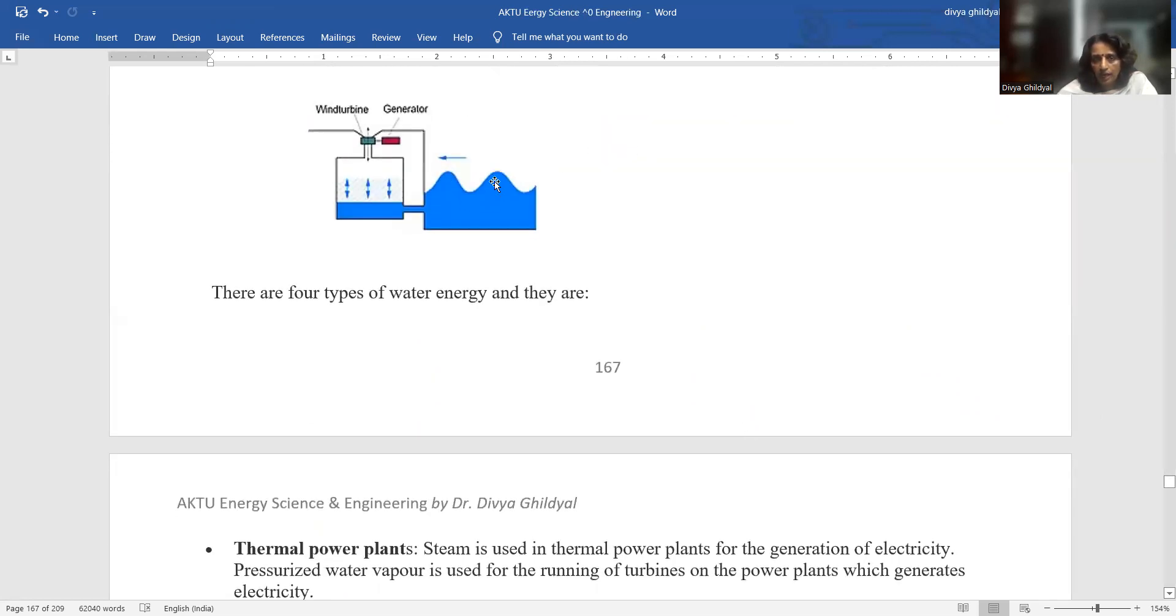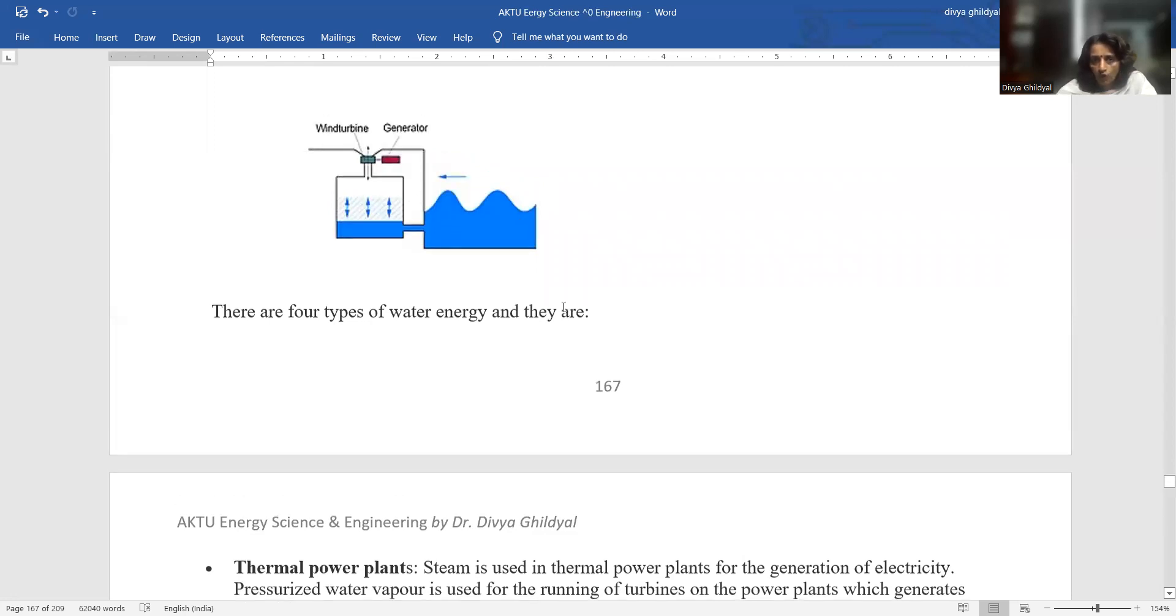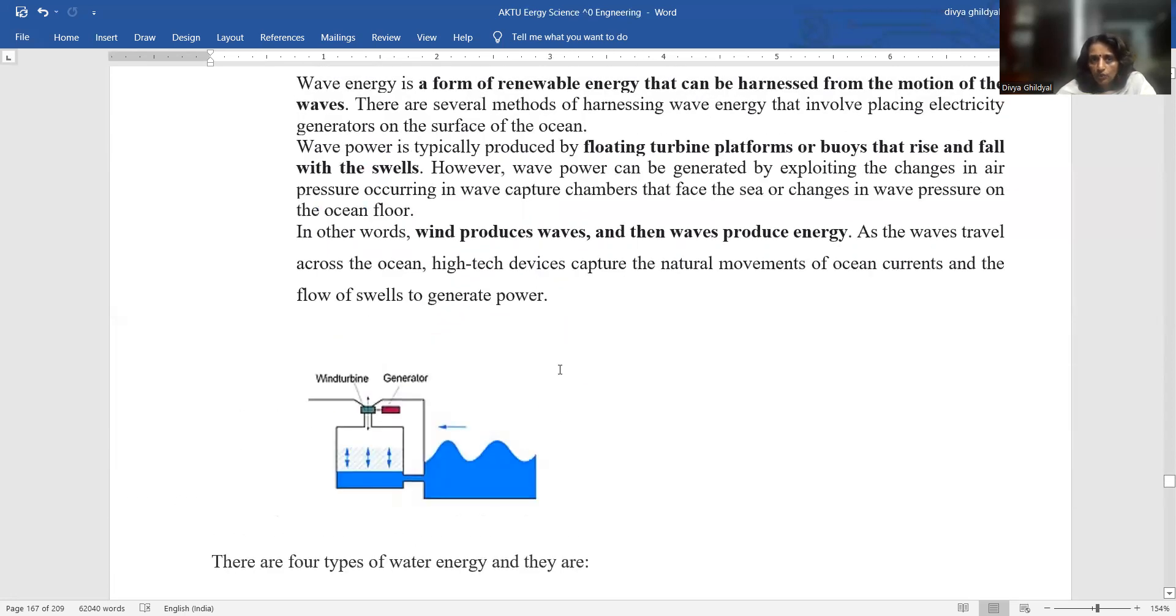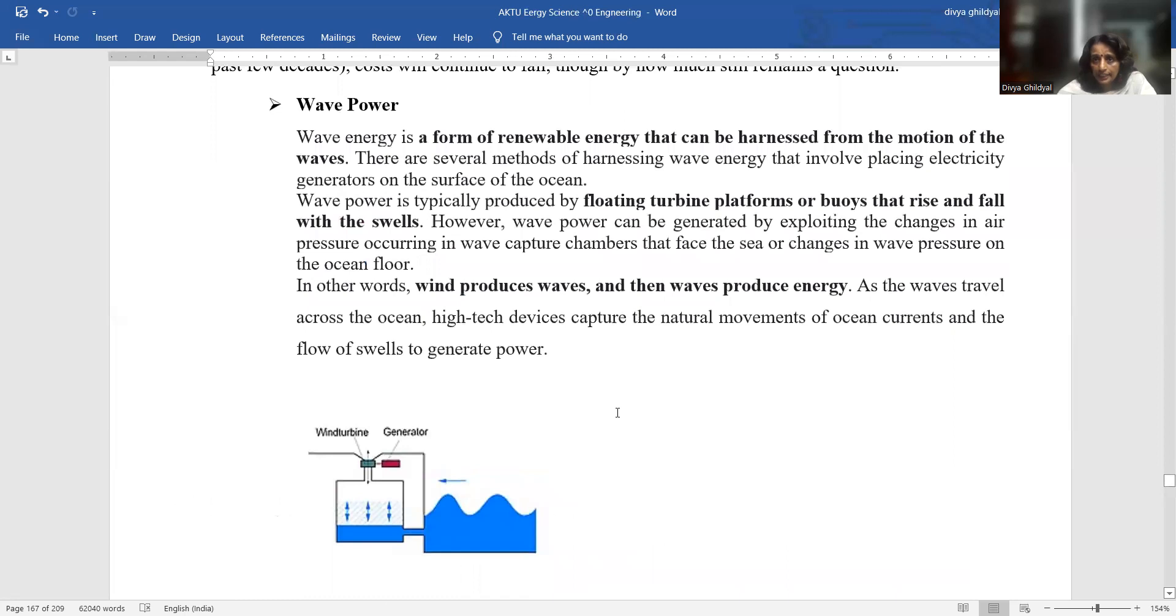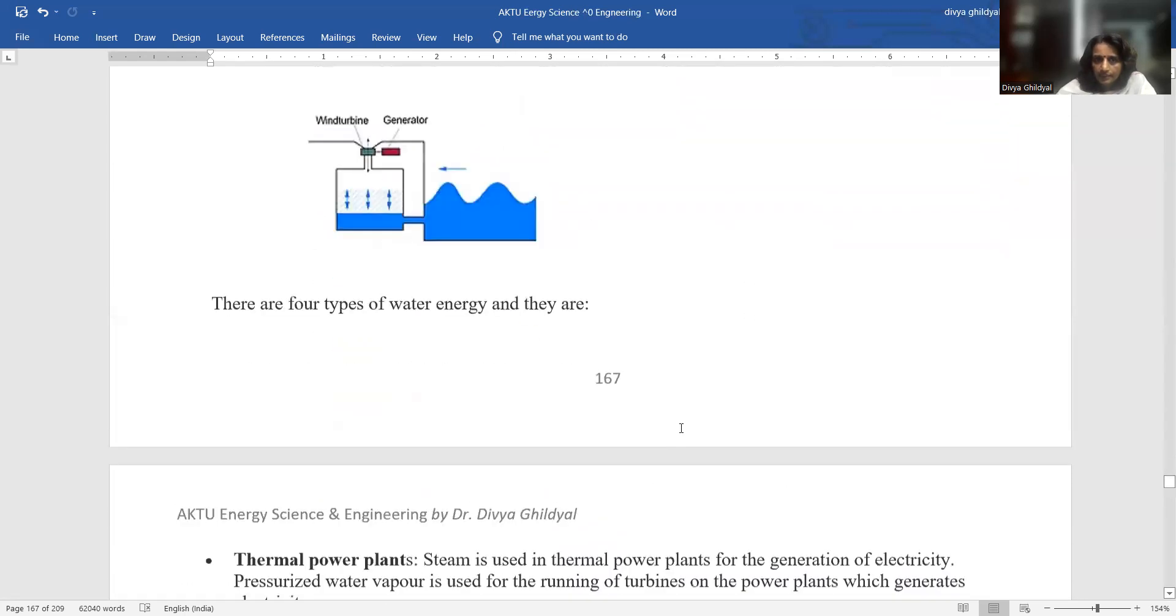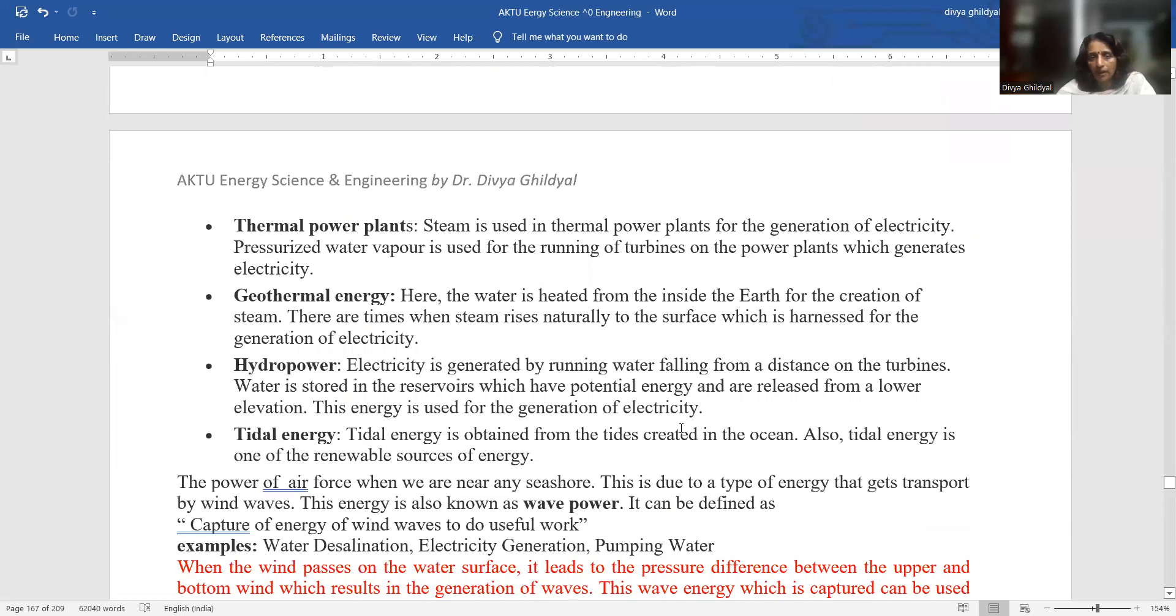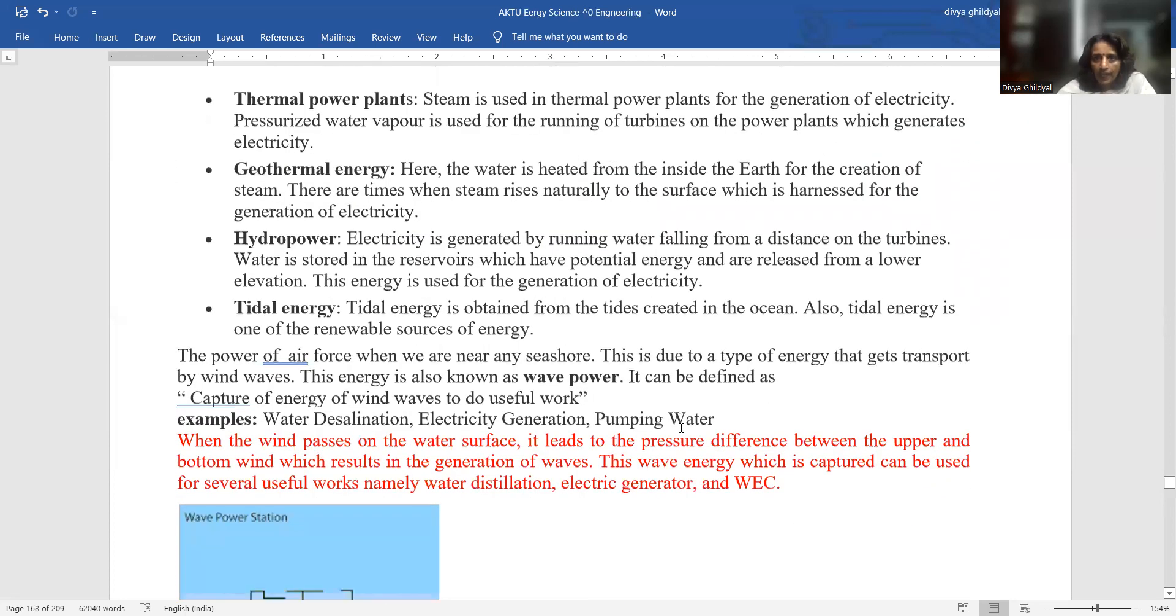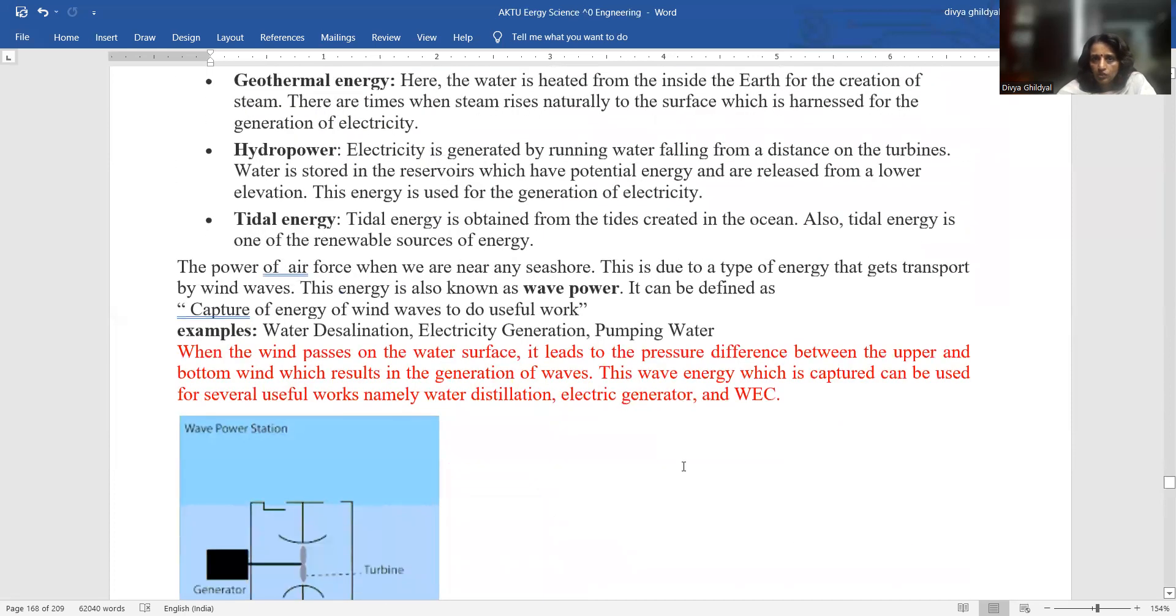A wave is moving up and down. The wave is actually going up and down, creating a rise and fall, resulting in pressure difference resulting in power extraction and resulting in generation of electricity.